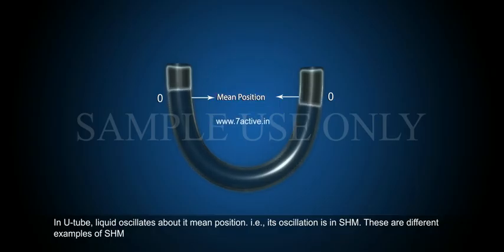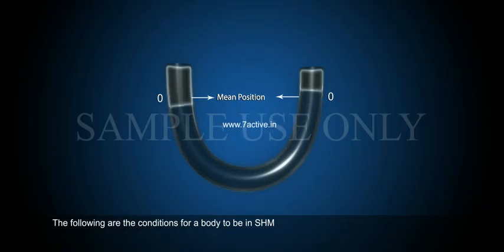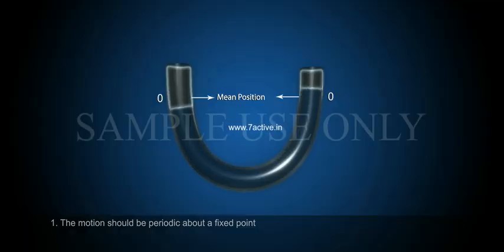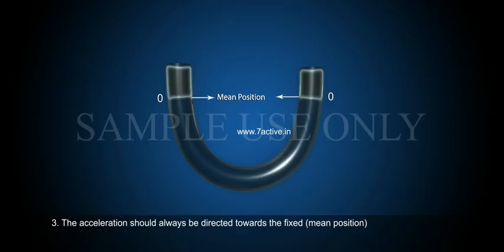These are different examples of SHM. The following are the conditions for a body to be in SHM: 1. The motion should be periodic about a fixed point. 2. Acceleration and displacements should always be in opposite directions. 3. The acceleration should always be directed towards the fixed mean position.